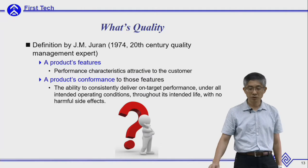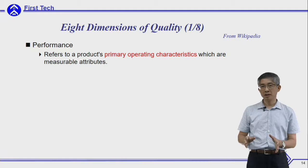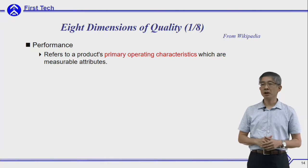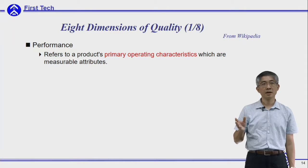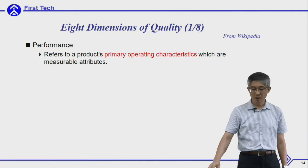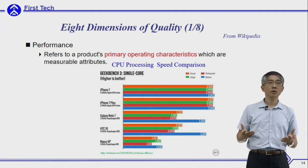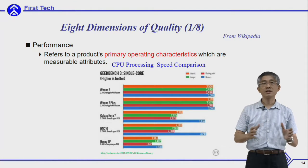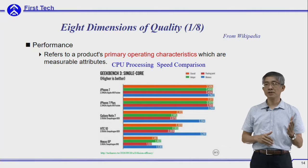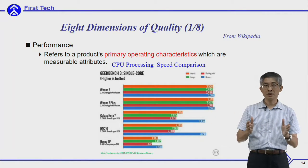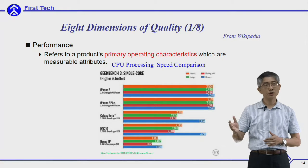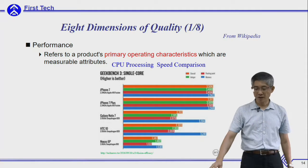I also checked the definition in Wikipedia, which divides quality into eight dimensions. The first is performance — a product's primary operating characteristics, which are measurable attributes. For example, when you buy a cell phone or notebook, you first want to compare processing speed. Here is a comparison of various CPUs for cell phones — some are faster, some slower. This is one of the major performance metrics a consumer cares about.